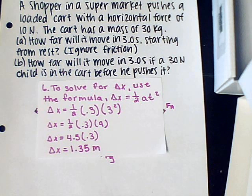To solve for delta x, use the formula delta x equals 1 half at squared. We then plugged in the known information and solved that delta x is equal to 1.35 meters.